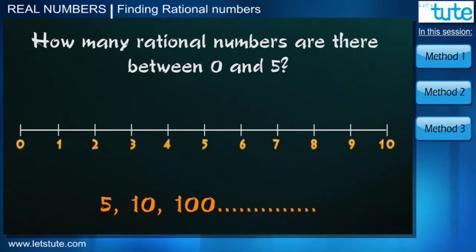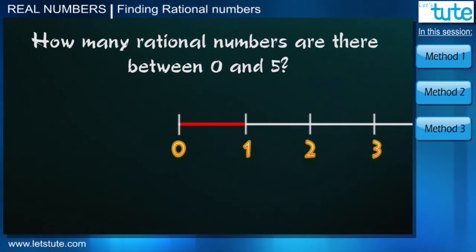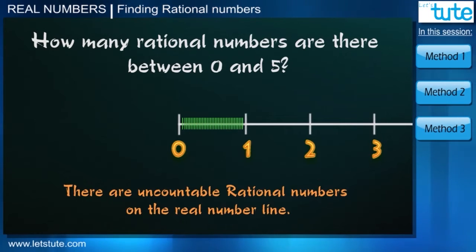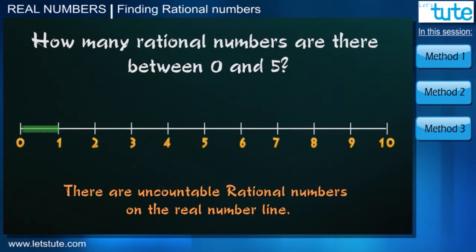In fact, even if you choose the smallest interval, there are many rational numbers. And so we conclude that there are uncountable rational numbers on the real number line.